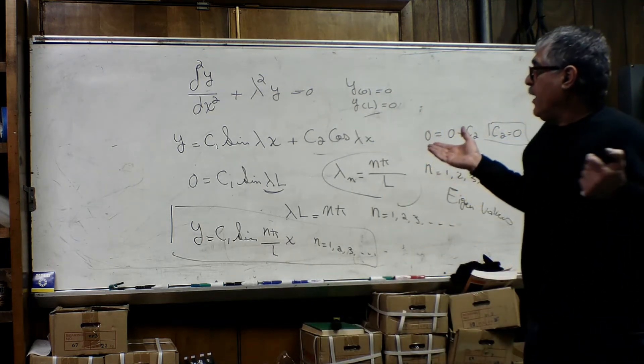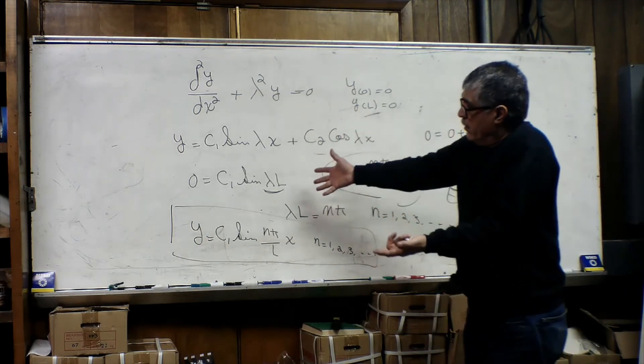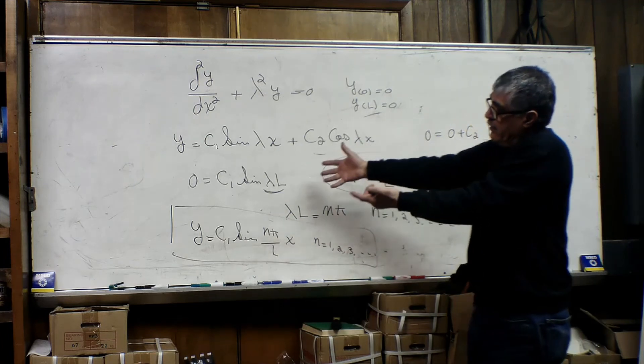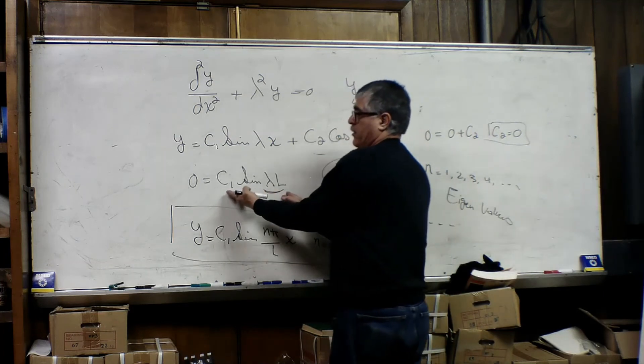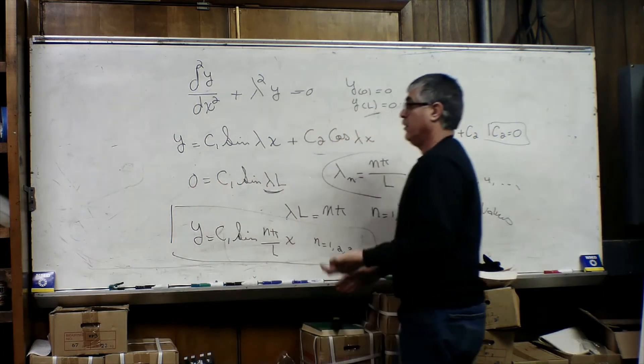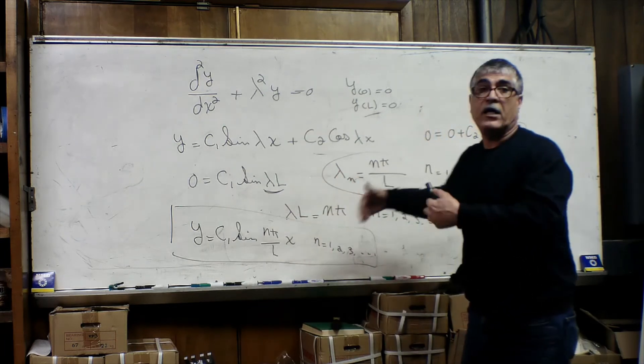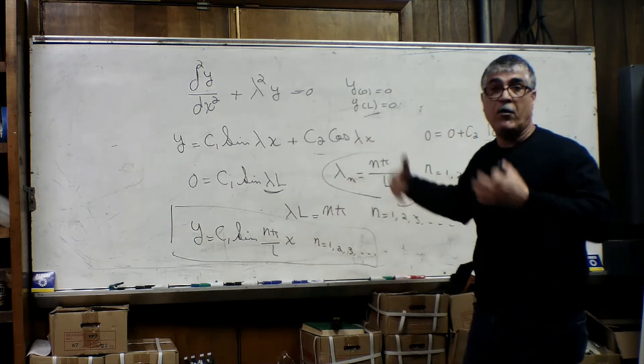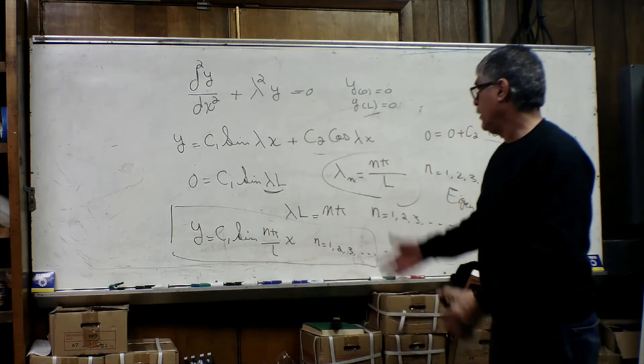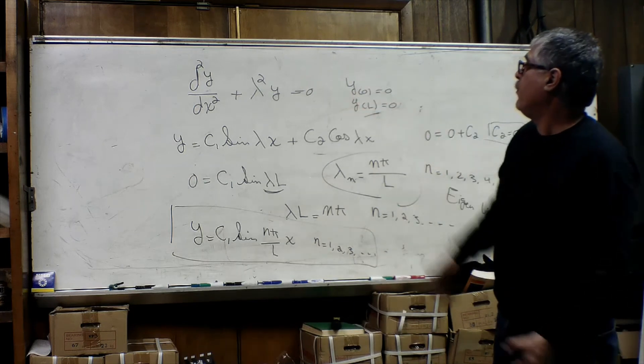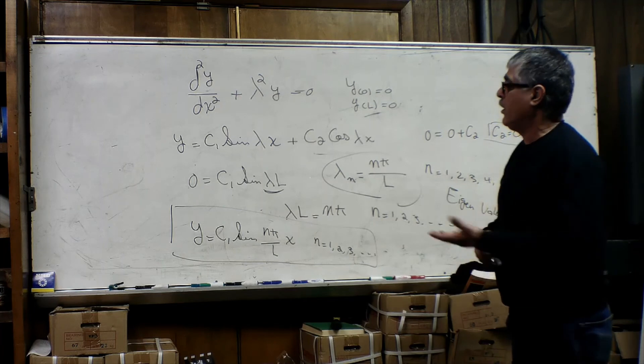So what we really have to do once we apply our boundary conditions is just look at what we have and use our common sense. How can this portion be equal to 0? Only if lambda L is n pi, a multiple of pi. Sine of pi is 0, 2 pi is 0, 3 pi is 0, 4 pi, all 0s. So this is a good example of eigenvalues and eigenfunctions.